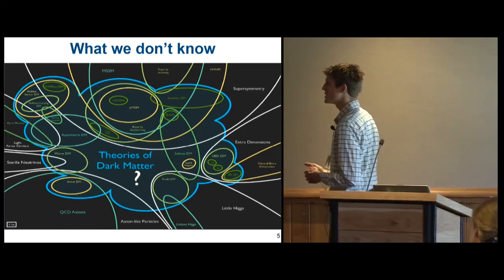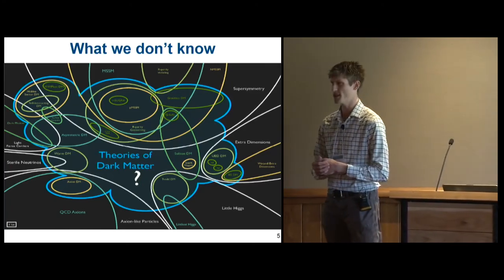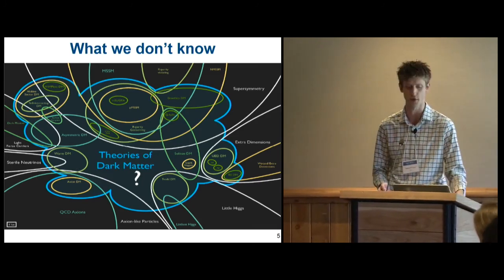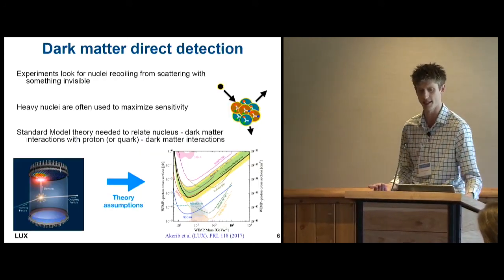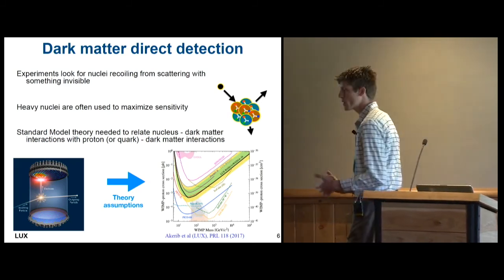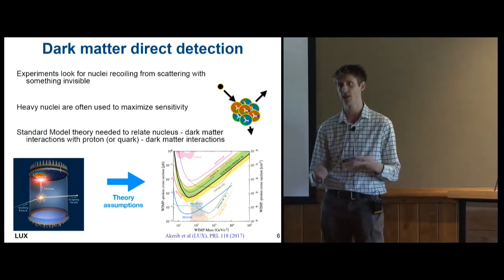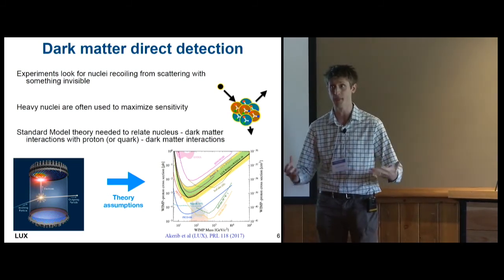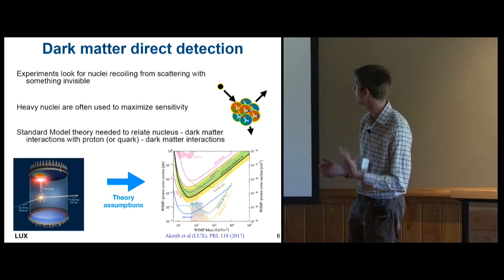But we really don't know very much about it. And there's a whole landscape of possible theories for different models of dark matter that we'd like to disentangle. And the only way we're going to be able to do this is if we can actually detect dark matter interacting with something else in a lab and start really getting experimental handles on it.